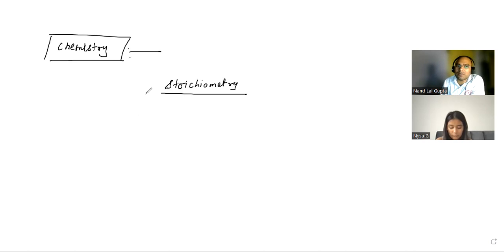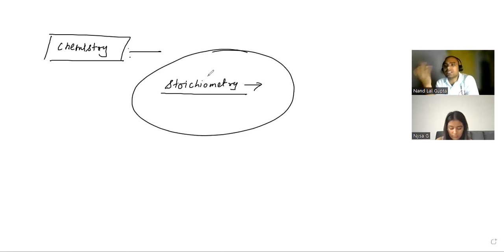In your chapter, the first thing is stoichiometry. Stoichiometry implies how much reactant will react and how much product is going to form.